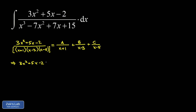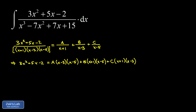On the left-hand side the entire denominator cancels, leaving 3x squared plus 5x minus 2. On the right-hand side, when we distribute all three factors to each term, one factor cancels and the other two survive: we get A times (x minus 3)(x minus 5), plus B times (x plus 1)(x minus 5), plus C times (x plus 1)(x minus 3).